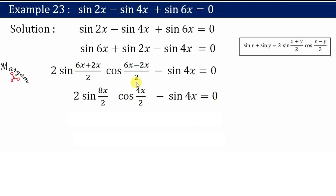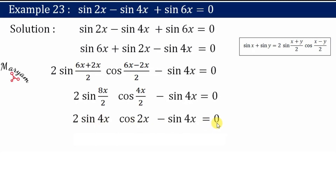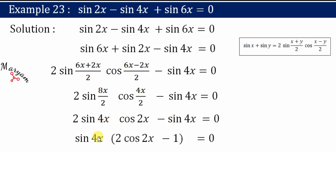After dividing — 8x/2 gives 4x and 4x/2 gives 2x — what we get is 2 sin 4x · cos 2x − sin 4x = 0. You can see that sin 4x is common in both terms.